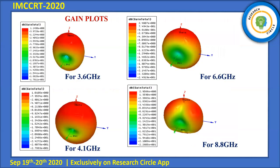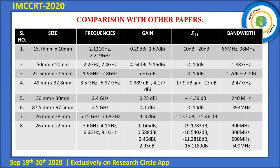Apart from the S11 graphs, we also have different performance metrics like gain, radiation patterns, and VSWR. For 3.6 GHz, we obtained a gain of 1.1450 dB. For 6.6 GHz, we obtained a gain of 2.46 dB. For 4.1 GHz, we obtained a gain of 1.01 dB. And for 8.8 GHz, we obtained a gain of 2.95 dB. VSWR — voltage standing wave ratio — should be very close to 1, meaning that whatever the antenna radiates reaches the target with minimal loss. We have attained VSWR values very close to 1.